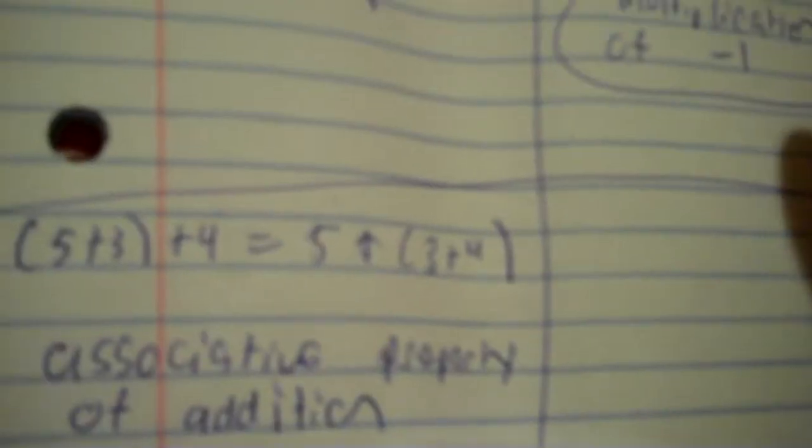Now we see: (five plus three) plus four equals five plus (three plus four). Do the parentheses first: five plus three is eight, plus four is twelve. On the other side: three plus four is seven, five plus seven is twelve. They're both twelve. All that happened is the parentheses shifted. Whenever you see a shift in parentheses, that's called the associative property of addition.